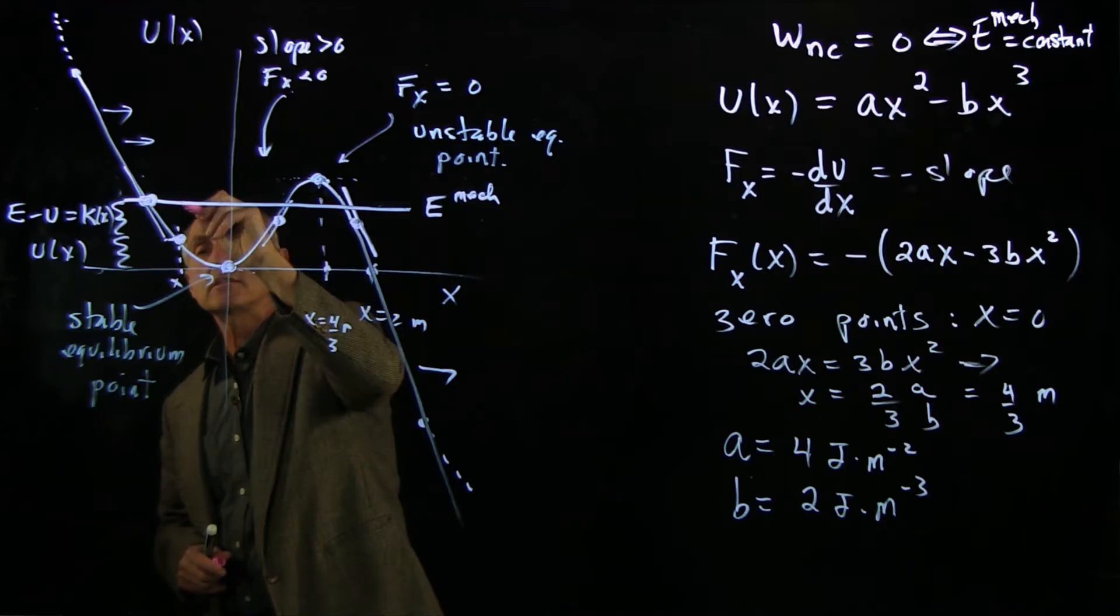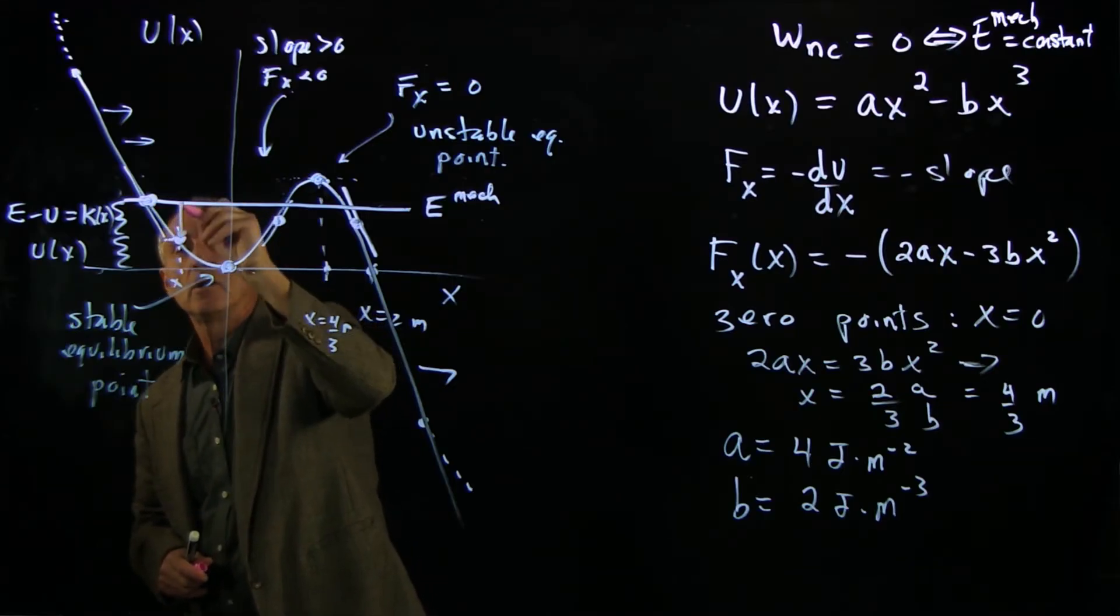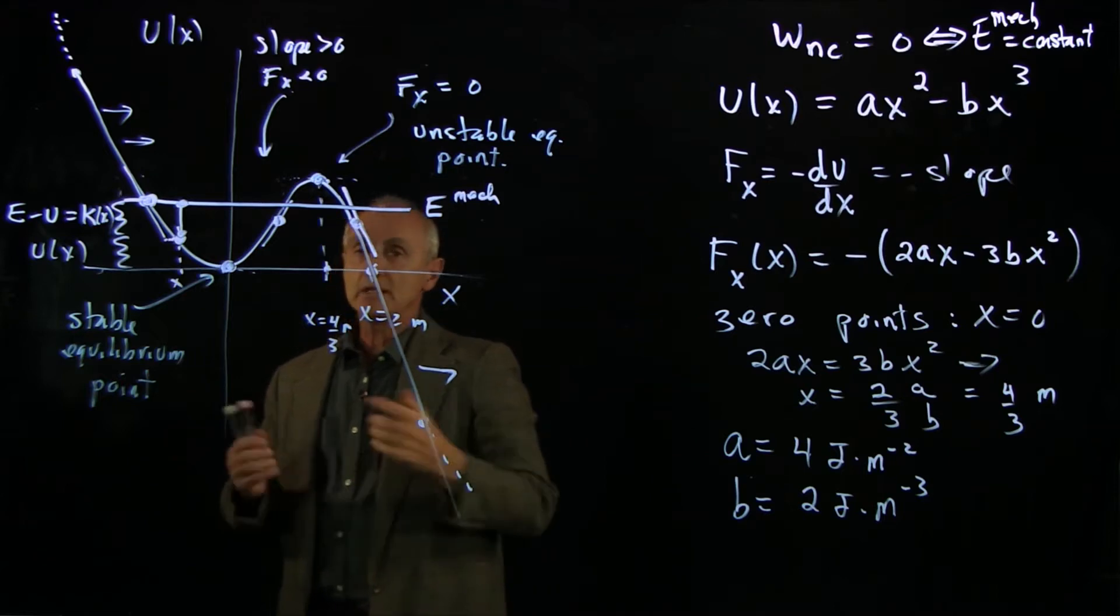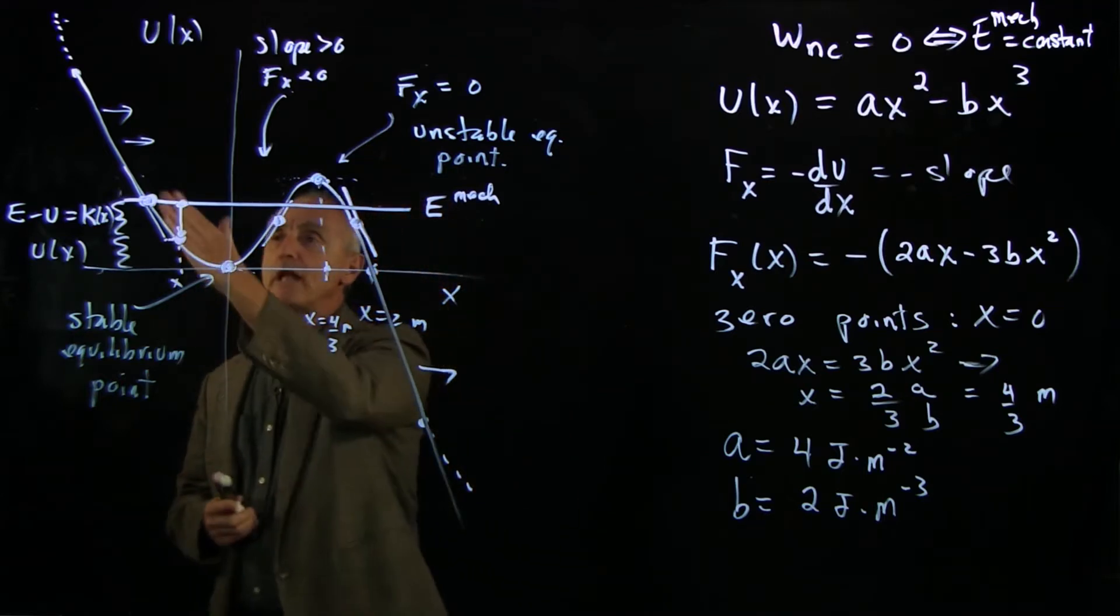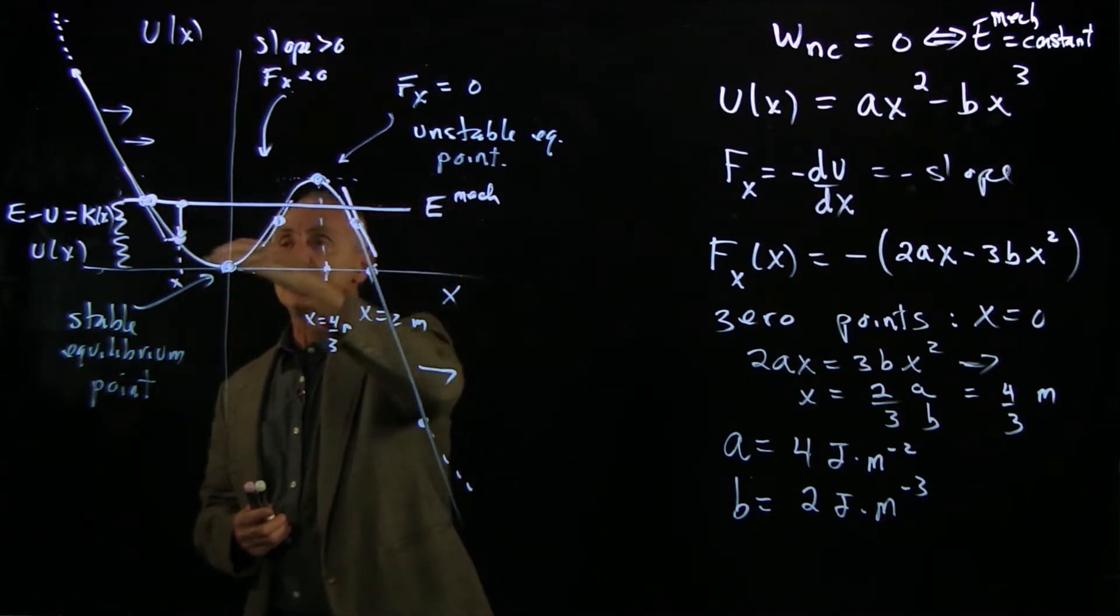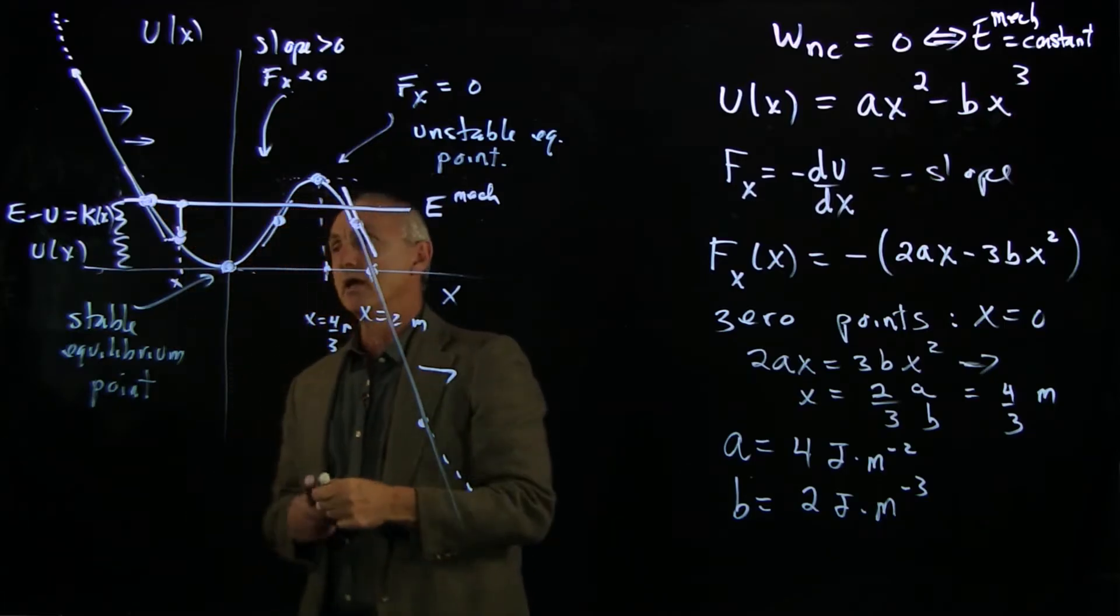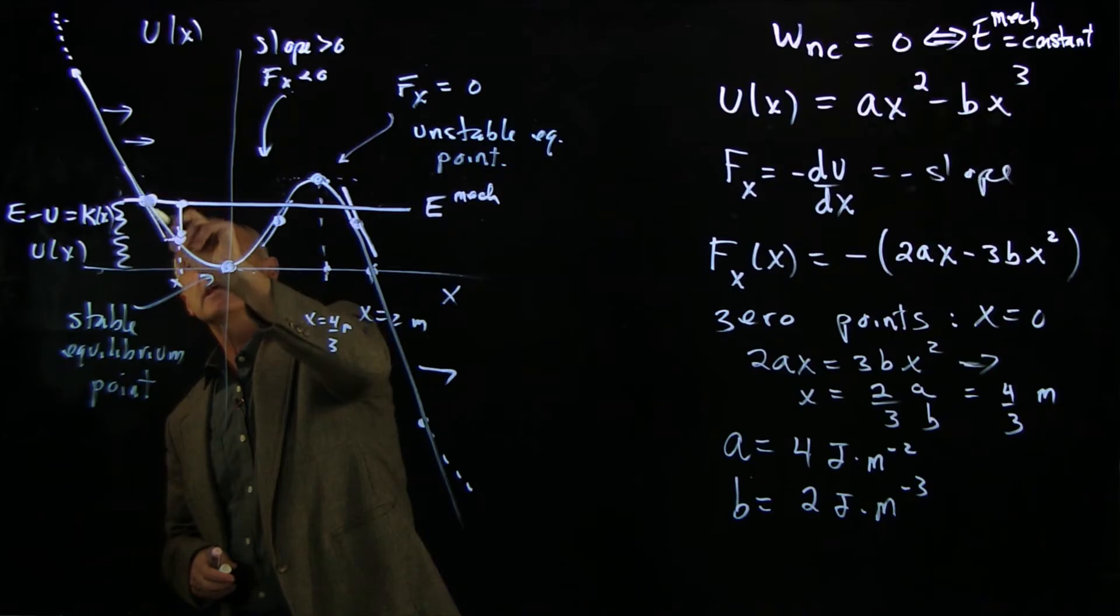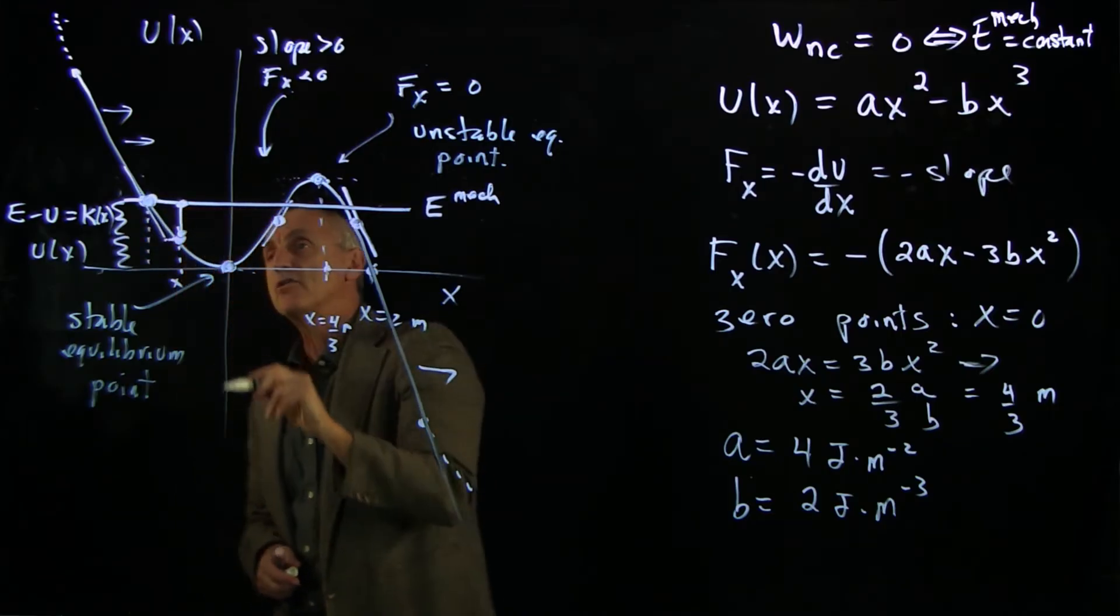So this here represents the kinetic energy. And now we can ask ourselves, what would happen to the energies as our particle is moving? So if we start right here, the kinetic energy is zero, because all the energy is potential.